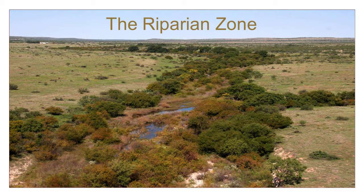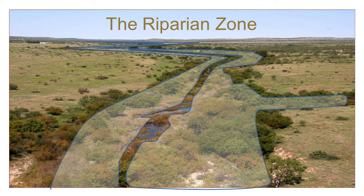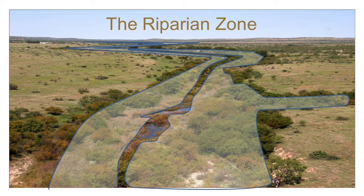Let's make sure we have a common understanding of what riparian means. This is a term that has really only come into common usage in Texas in the past 10 to 15 years, even among land management professionals. A riparian area or zone is the part of the landscape that rivers and streams flow through, shown in blue in this picture. This includes stream banks, floodplain, plants, soils, and rocks that make up the ribbon of land that follows and interacts with the waterway.